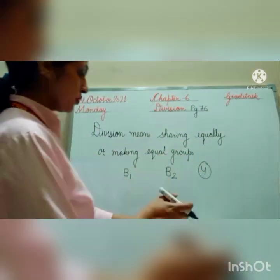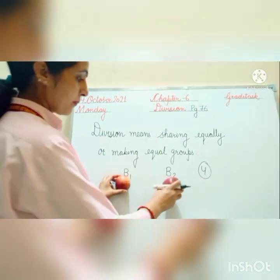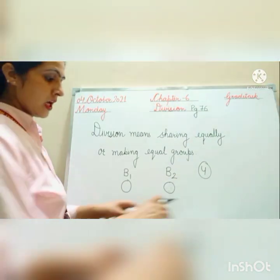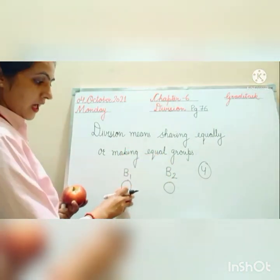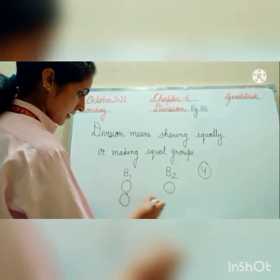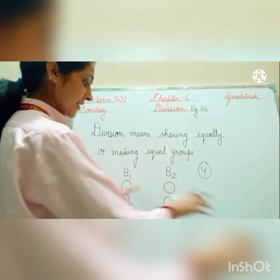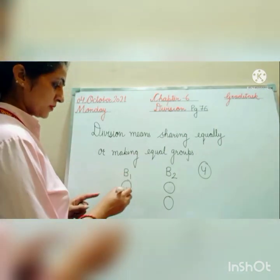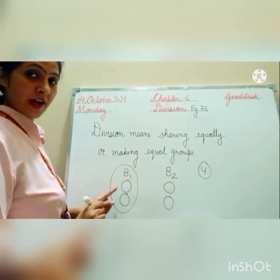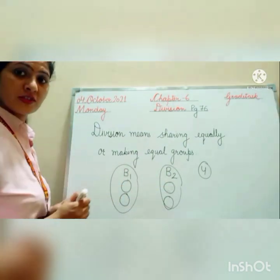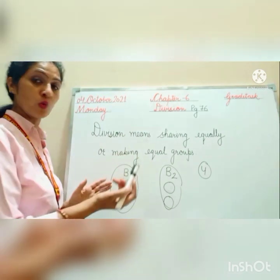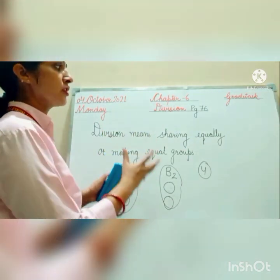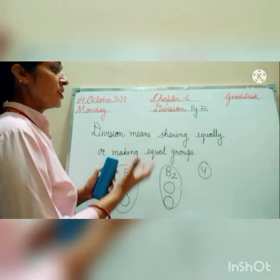I am drawing also. Suppose 1 apple I have given to this boy, and 1 apple to this boy. Then I have taken 2 more — 1 again given to this, and 1 to this. So both are getting an equal number of apples. I have made equal groups. Boy 1 is having 2 apples, Boy 2 is also having 2 apples — same group. So division means sharing equally or making equal groups. This is the definition of division. In division, we are sharing equally or making equal groups.